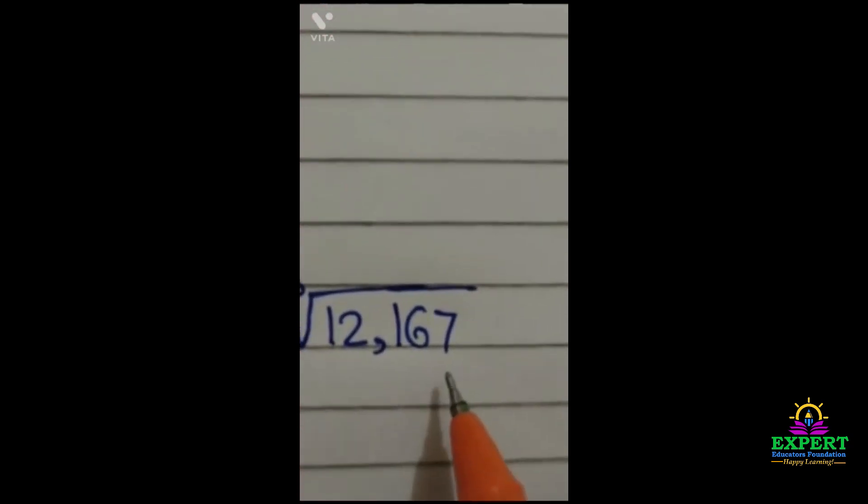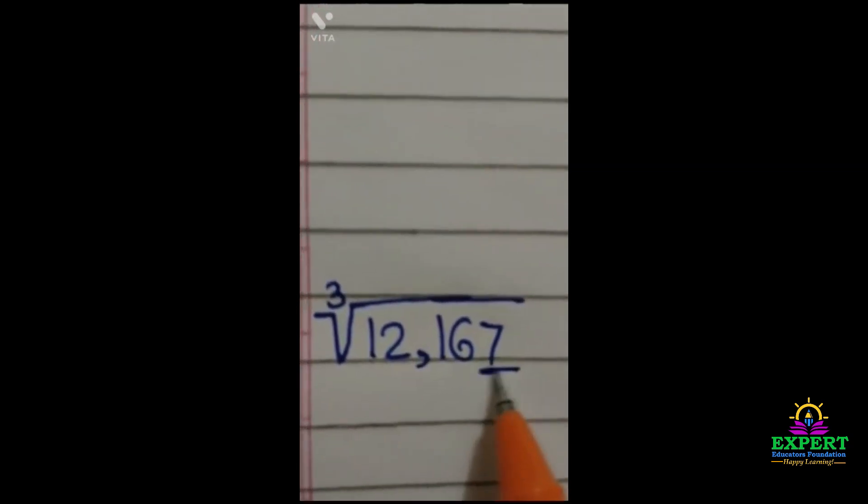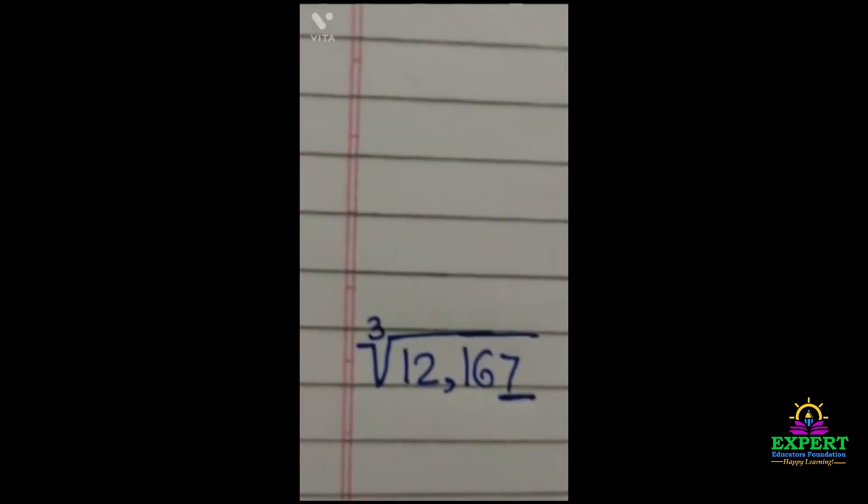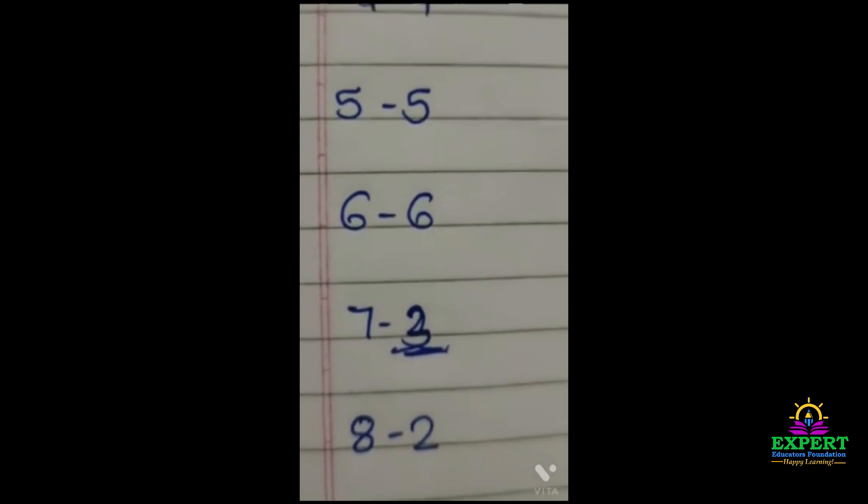Now see here, the last digit is 7, so it will be considered as 3, as we have seen here.